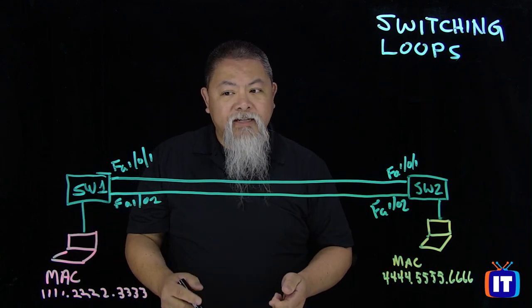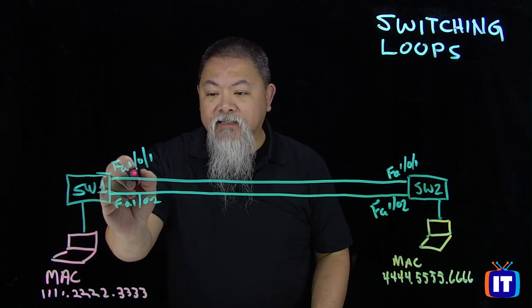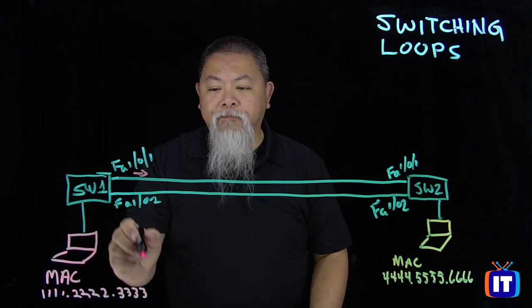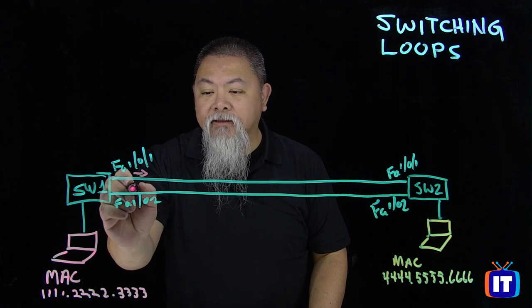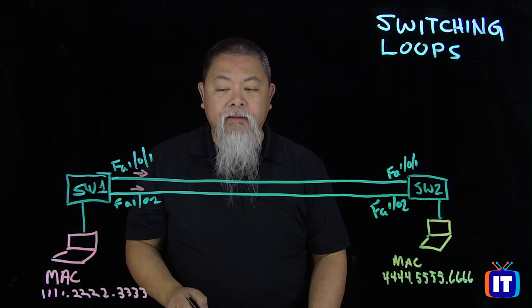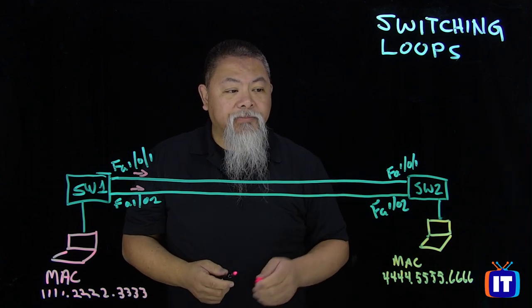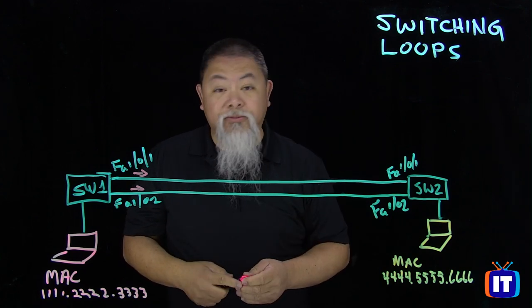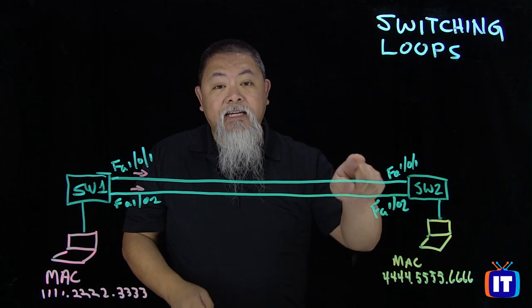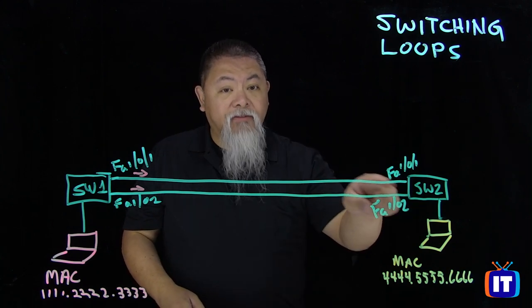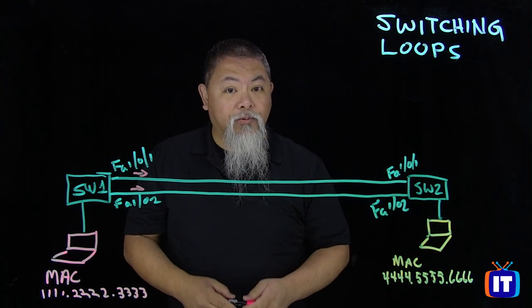Now the reason why that's important is that that means that its broadcast is going to go across this link here and across this link right here too. Now when it does that and it arrives over on Switch 2, well, what will happen on Switch 2 is when it receives a broadcast, it will also send it out every other port except for the one it came in on.